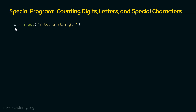After this, we need three different variables to keep track of the count of digits, letters and special characters. Here are these three variables: D, L and O, and each of these variables is initialized to zero. D represents the count of digits, L represents the count of letters, and O represents the count of other characters or special characters. The next step is to write the for loop to iterate over each character of the string, checking whether the character is a digit, a letter, or a special character.